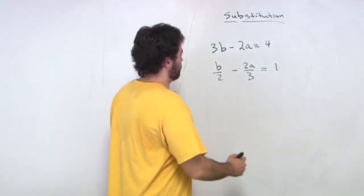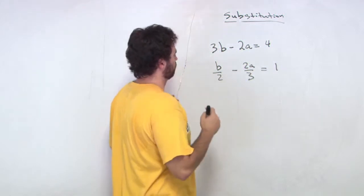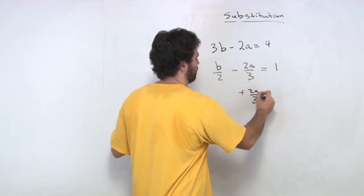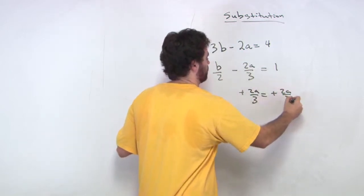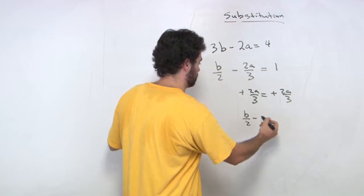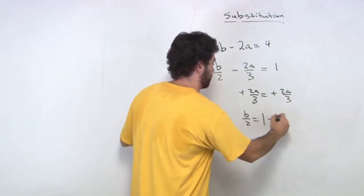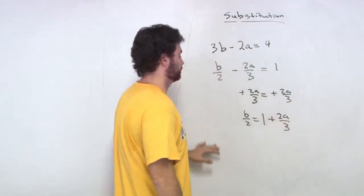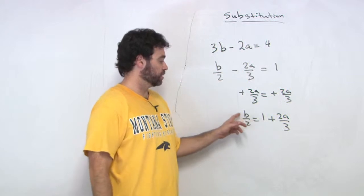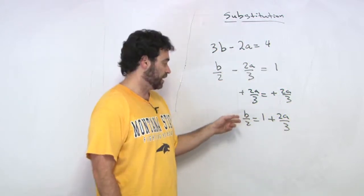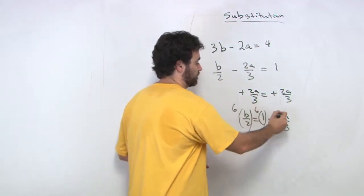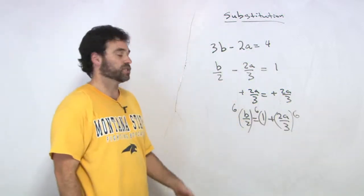I'm going to get the b by itself, and before I do that, I'm going to add that to that side. I'm going to add 2a over 3, and we get b over 2 equals 1 plus 2a over 3. Using an old trick, we're going to multiply everything by the LCD, and multiply everything by 6, because I don't want to work with an algebraic fraction if I don't have to.